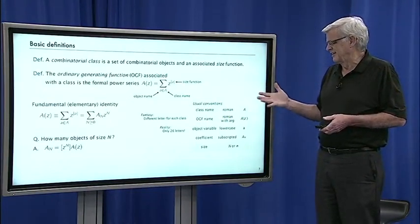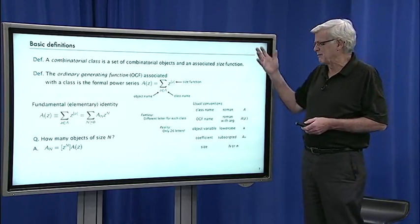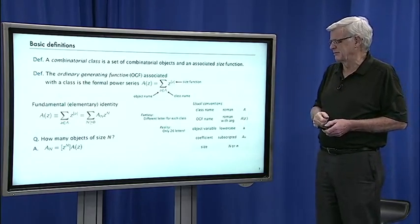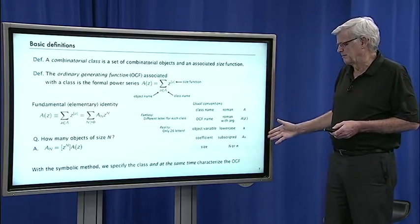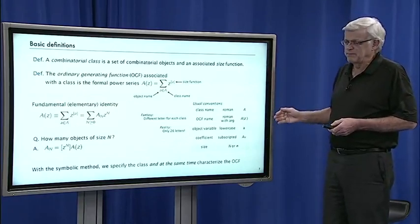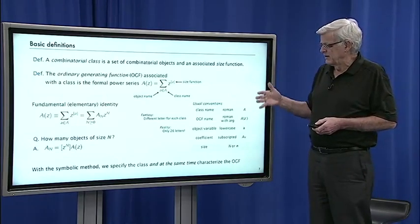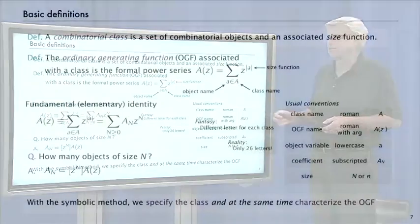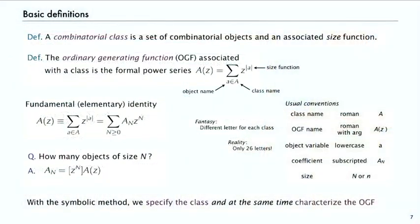This kind of adopts a fantasy that we have a different letter for each class. But actually, there's only 26 letters, and we look at way, way more classes. So sometimes, we have conflicts in these names. But we do the best we can. Now, with the symbolic method, what we can do is specify the class and at the same time characterize the generating function. That's the process we want to talk about today.